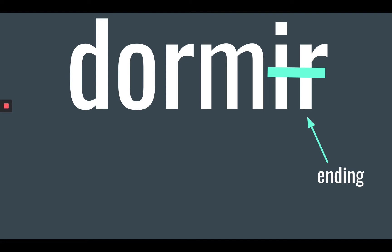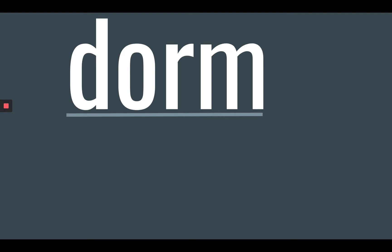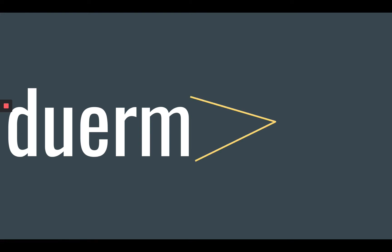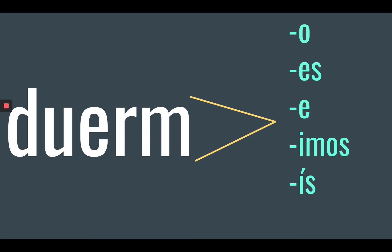Let's look at the verb dormir. Our first step when conjugating is going to be to take off IR, because that is our ending. So you always remove your ending first. We're left with dorm, which is our stem. We know that dormir is an O to UE stem-changing verb, so this O in dorm is going to become a UE, giving us our new stem duerm. Since dormir is an IR verb, the endings we're going to add are O, ES, E, IMOS, IS, and EN.